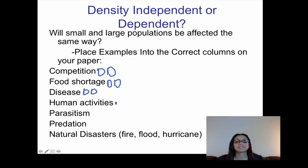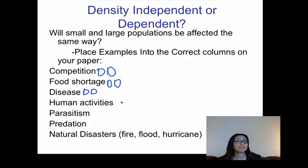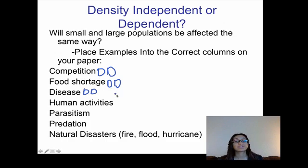Human activities: say humans come through and clear a large part of the forest — deforestation. Whether there's a small population of monkeys or a large population of monkeys living there, they're going to be affected regardless of size. So human activities are a density independent factor.